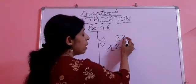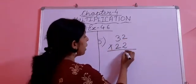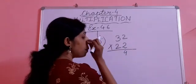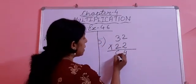So children, first let's start with the one's place number. 2 into 2, we get 4. Now we multiply the ten's place number. So 3 times 2, we write 6.